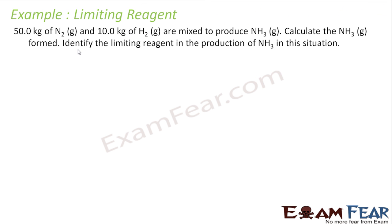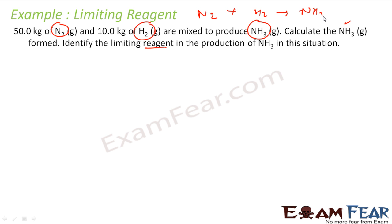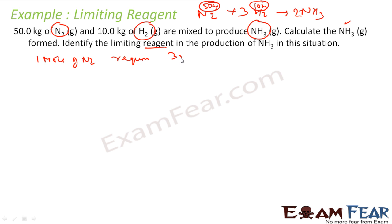We have 5 kg of nitrogen and 10 kg of hydrogen combined to form ammonia. We have to find the ammonia gas formed and identify the limiting reagent. The reaction is: N₂ + H₂ → NH₃. Let us balance this: N₂ + 3H₂ → 2NH₃. This is the balanced equation. From this reaction, 1 mol of N₂ requires 3 mol of H₂.